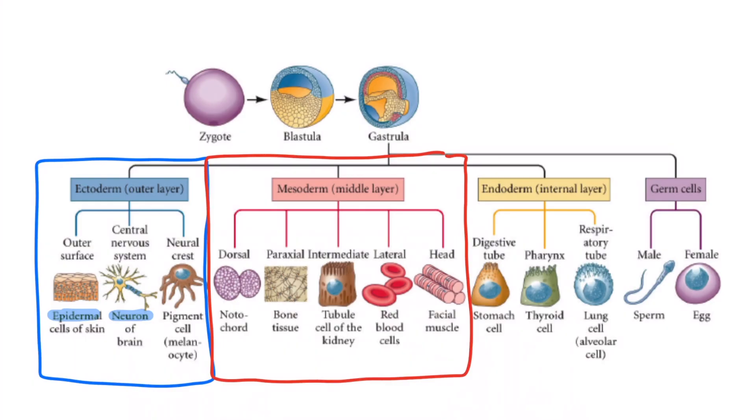It is important to know that lower phyla like Porifera and Cnidaria contain two primary layers that give rise to all the tissues and organs of the animals, making them diploblastic as they lack a true mesoderm.